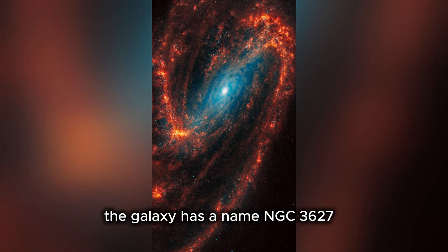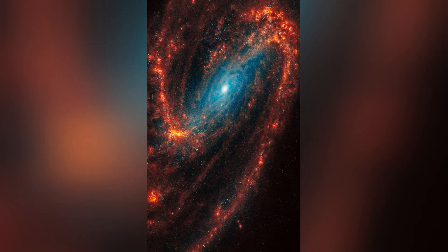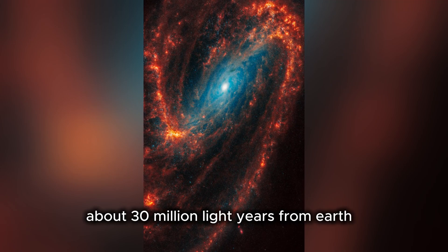The galaxy has a name, NGC 3627, part of the Leo triplet, about 30 million light-years from Earth.